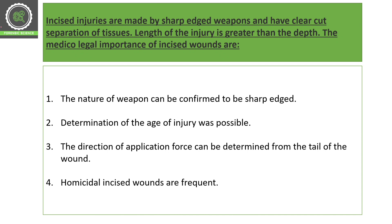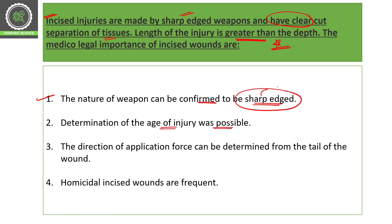First, we will talk about incised injuries or incised wounds. They are made by sharp-edged weapons and have a clean cut that clearly separates the tissues. The length of the injury is greater than the depth — this is a very important point. The medico-legal importance: the nature of the weapon can be confirmed on the basis of the sharp edge, such as a blade. The age of the injury can also be determined.